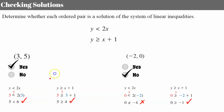Over here, we replace y with zero and x with negative two and we get a false statement. So I can stop right there. It doesn't matter that it checked for the second inequality because it failed — it's a false statement for the first inequality. This ordered pair is not a solution to the system of inequalities.